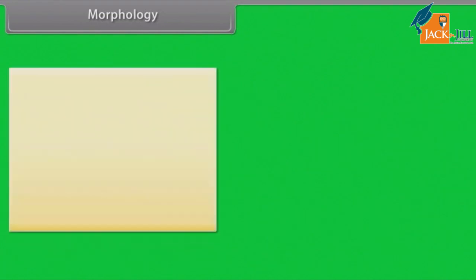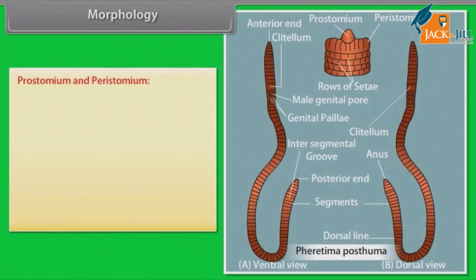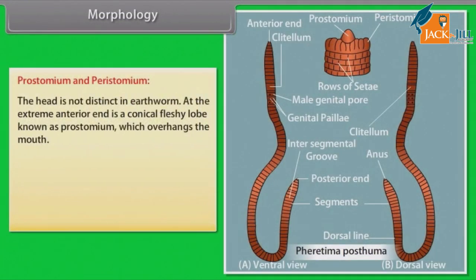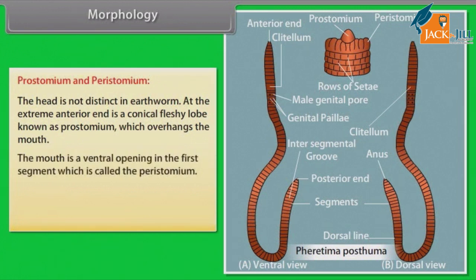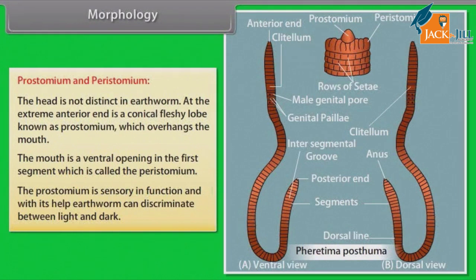The head is not distinct in earthworm. At the extreme anterior end is a conical fleshy lobe known as the prostomium, which overhangs the mouth. The mouth is a ventral opening in the first segment, called the peristomium. The prostomium is sensory in function and with its help, the earthworm can discriminate between light and dark.